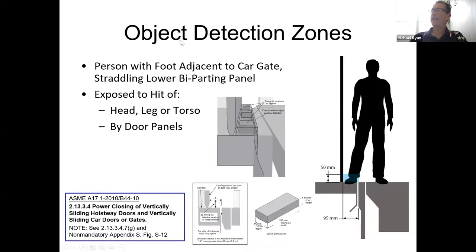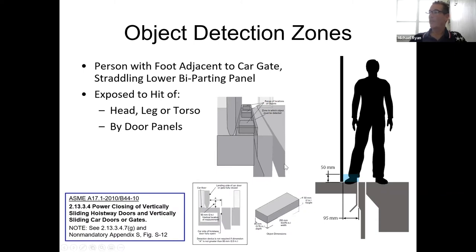They looked at one other detection area. Here's a guy who put his foot on the platform straddling the door and the building — you have to plan for stupid. So if somebody chooses to straddle a freight door by putting one foot on the platform and one foot on the building, and we can detect it, we don't want to hit his head, his leg, or his torso — nothing moves. There is a caveat: if his foot can't fit there, we're not required to look for it. But if it's big enough for a foot — 95 millimeters — and we can't trust that somebody won't put their foot there, we have to not move.